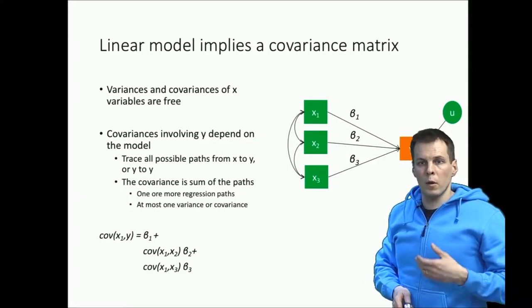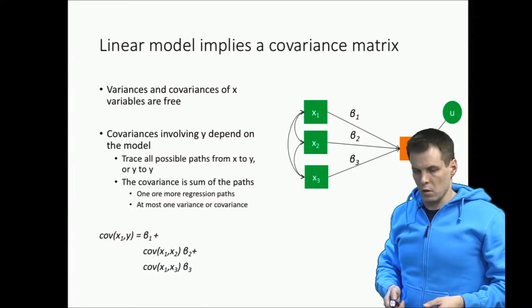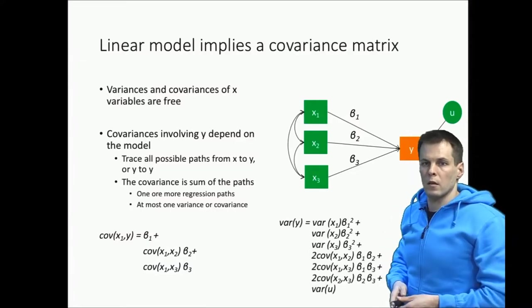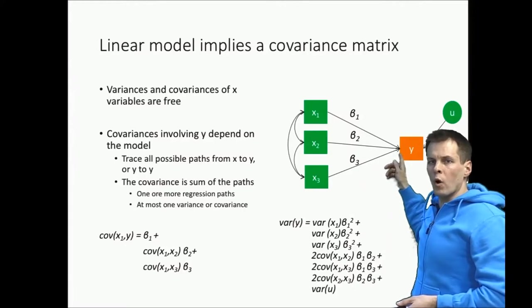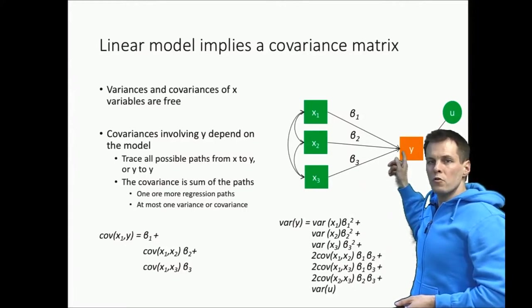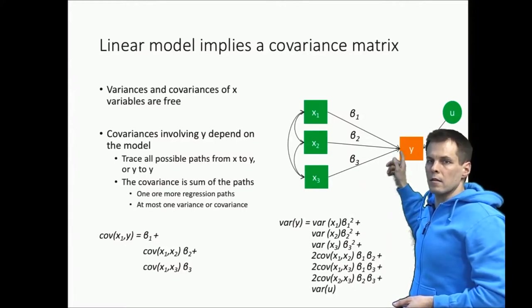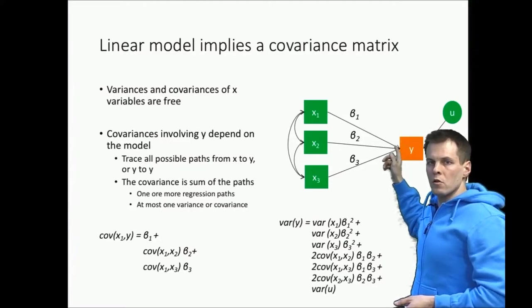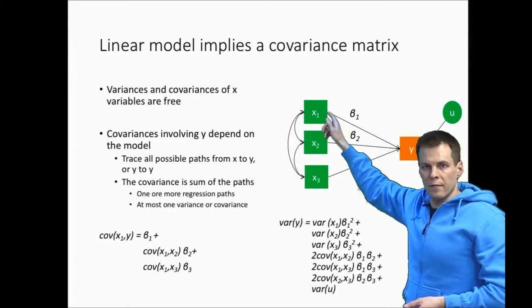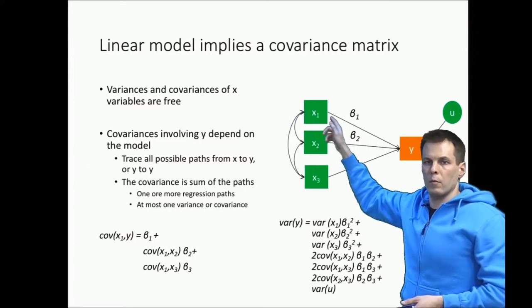Things get more interesting when we look at what is the variance of y. So the variance of y is given by that equation here. The idea is that we go from y and then we go to each source of variance of y and then we come back. So we go from y to x1, we take the variance of x1, and then we come back.